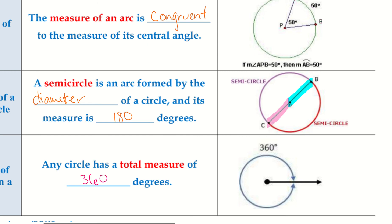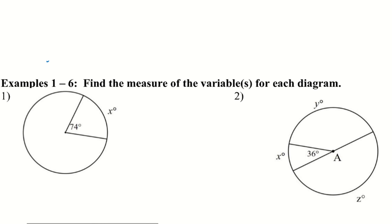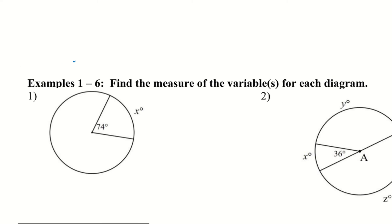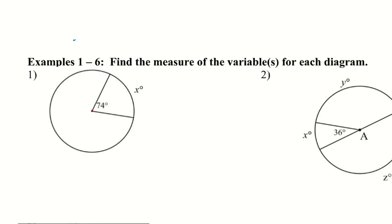Let's try a couple examples. Find the measure of the variables for each diagram. Whenever we have an angle right on the center of the circle, that angle and the arc are going to be the same degree. So therefore, x equals 74 degrees.